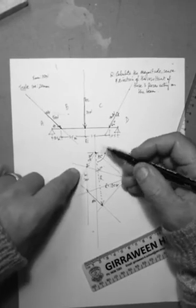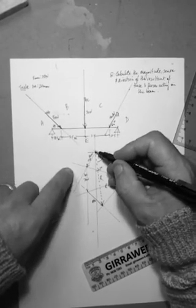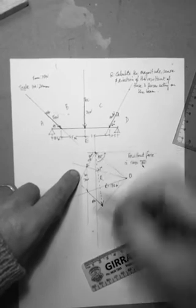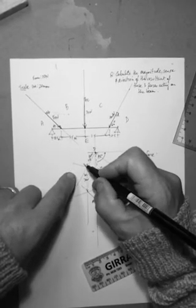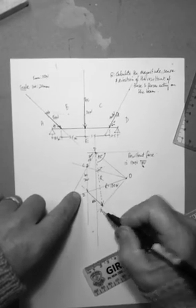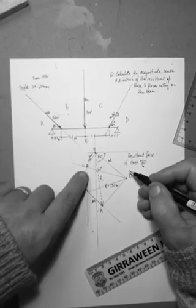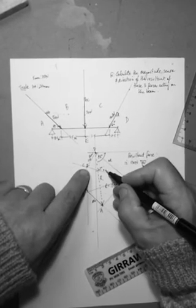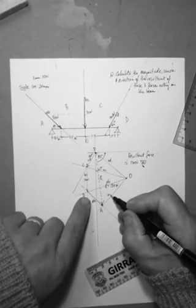O, we'll call this, these points, yeah, this vector over here, O, we'll call it D, C, B, and A. So OD, sounds a bit sus, doesn't it? OD, vector OC, vector OB, vector OA.